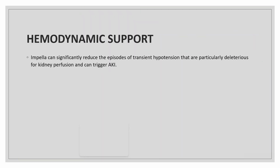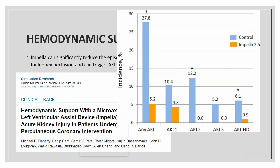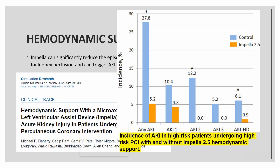Hemodynamic instability is a prime factor responsible for precipitation of acute kidney injury. Impella can significantly reduce the transient hypotensive episodes that are deleterious for kidney perfusion and can trigger AKI. A study published in Circulation in 2017 found that the incidence of AKI in high-risk PCI patients was lower when Impella was used.